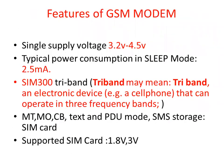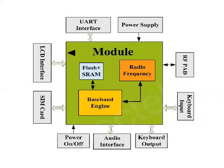Now we can see here the important features of a GSM modem. Single supply voltage will be 3.2 volt to 4.5 volt. Typical power consumption in sleep mode will be 2.5 mA. SIM-300 is a tri-band device, meaning it can operate in three frequency bands — for example, a cell phone that can operate in three frequency bands. It supports MT, MO, CB, text and PDU mode, SMS storage, and SIM card. Supported SIM card voltages are 1.8 volt and 3 volt.